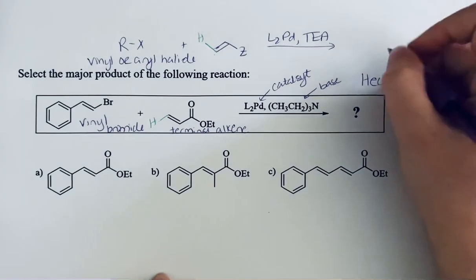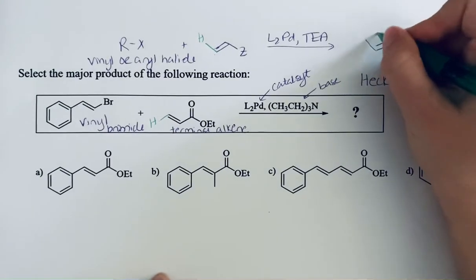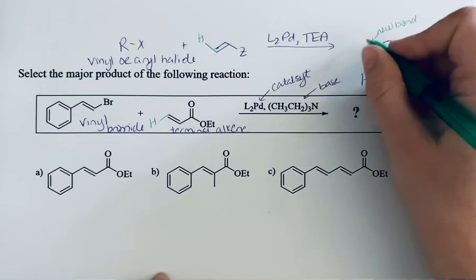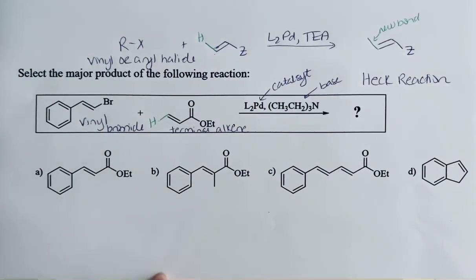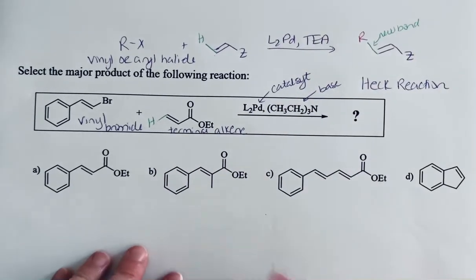So we could still see that alkene. We could show a new bond and that new bond will be to the R group whatever it is from that vinyl or aryl halide. So that's what we can do here.